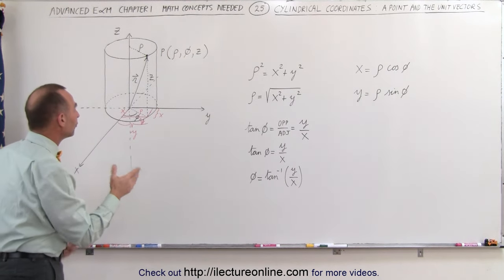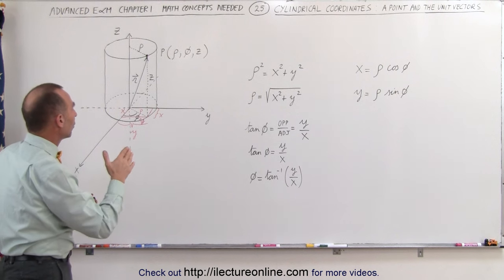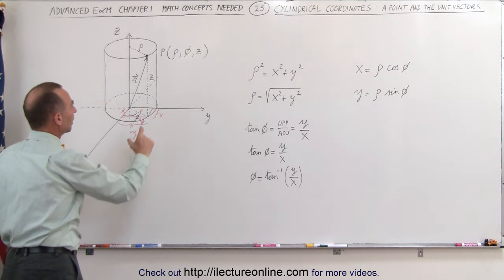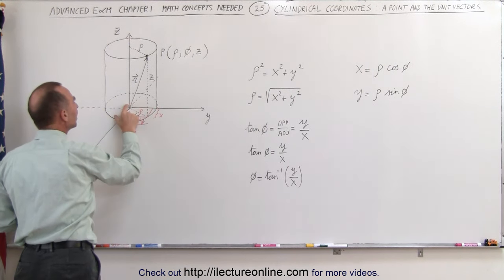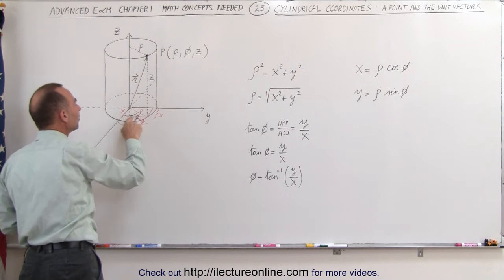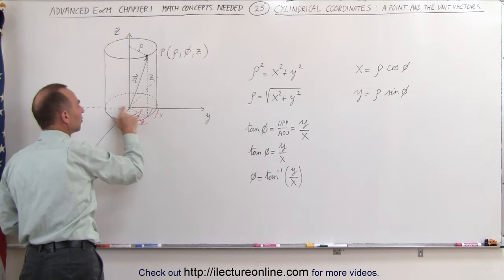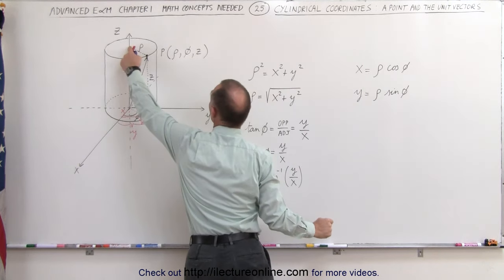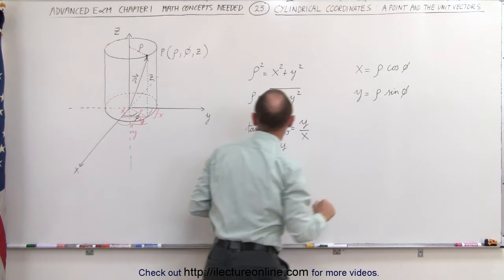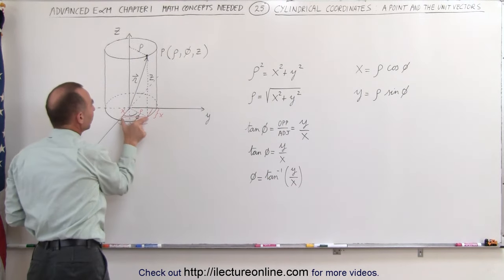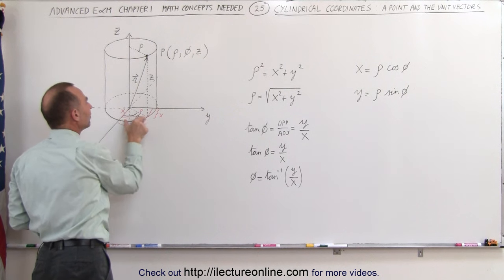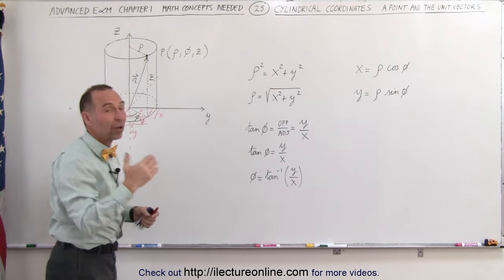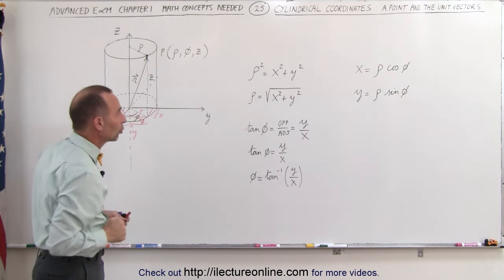Finally, we also want to be able to express x and y in terms of the cylindrical coordinates. And if you look at x here, x can be defined as the hypotenuse rho times the cosine of the angle. So x = ρ cos(φ). And then y is the opposite side to the angle, therefore y = ρ sin(φ). And that's how we go back and forth between Cartesian and cylindrical coordinates.